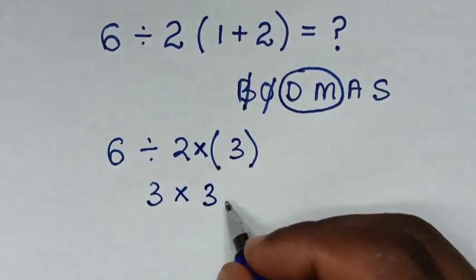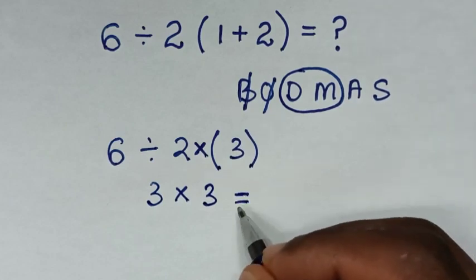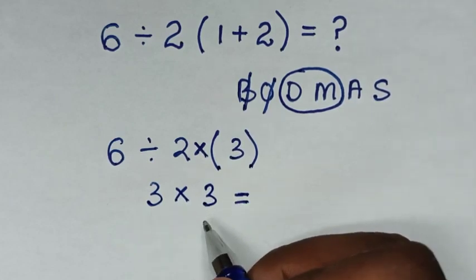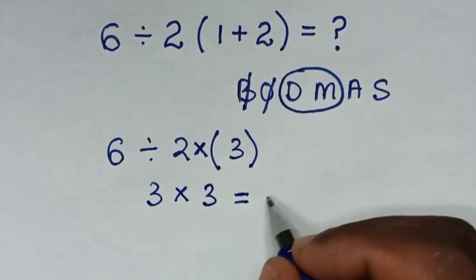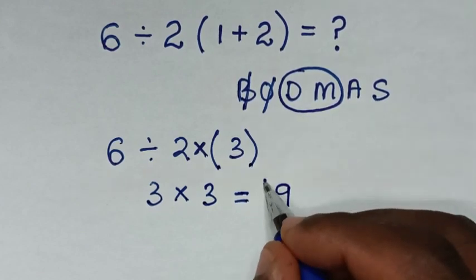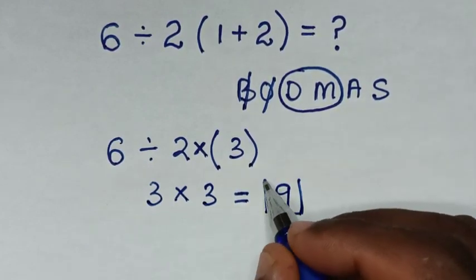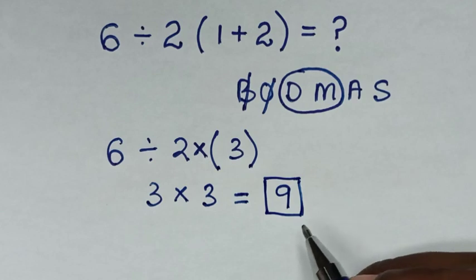Then it will be equal to — we are left with this multiplication operation of 3 times 3, which is 9. Therefore this is our final answer. Thank you for watching.